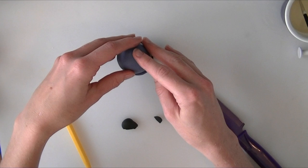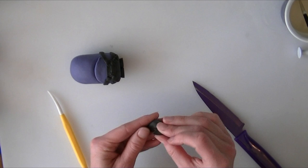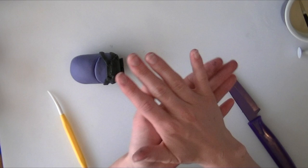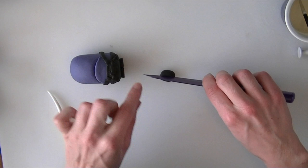He has only got little legs on this one, and then we are going to make him some feet. We're going to roll into a ball to start with, and then make it slightly oval shaped.